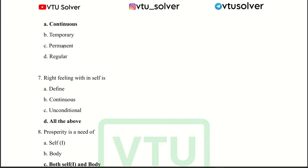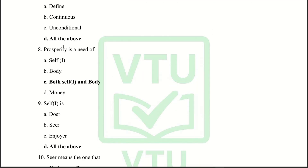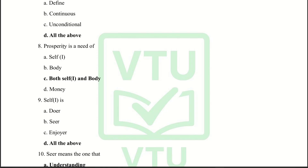Next question: The need of self are continuous — one is intermittent, one is continuous. Next question: Right feeling within self is all of the above. Next question: Property is needed by both self and body.